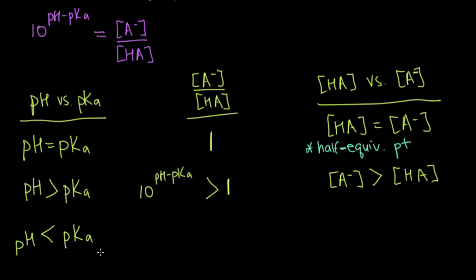The last scenario, pH is less than pKa. Well, in that case, we're raising 10 to a negative number because we're subtracting a bigger number from a smaller number. And that means that our ratio, A minus over HA, is actually less than one.